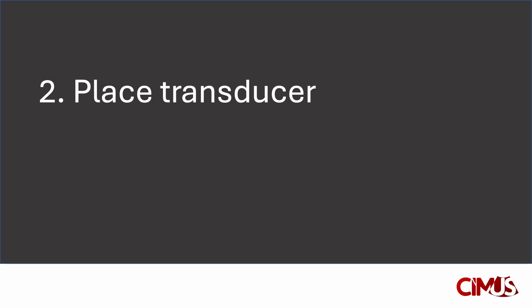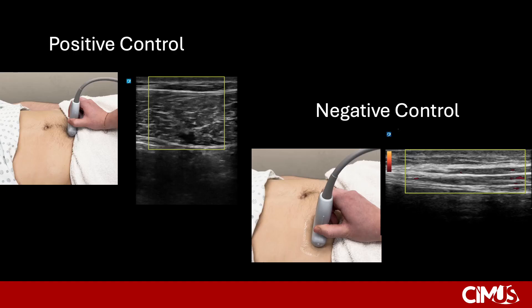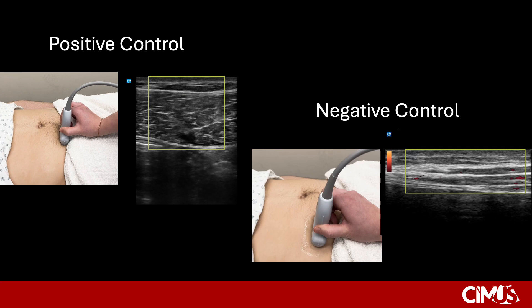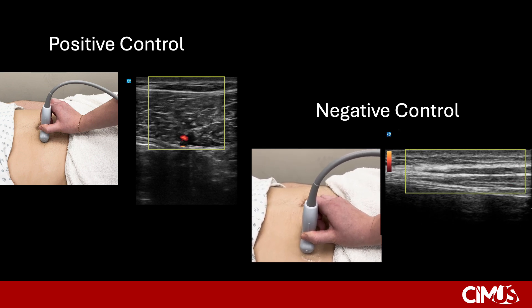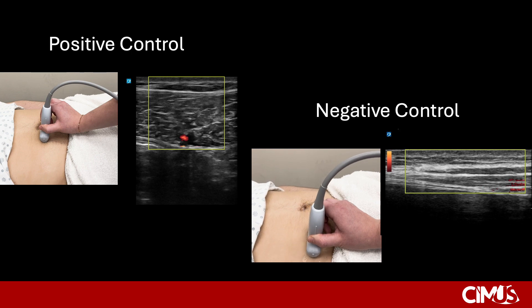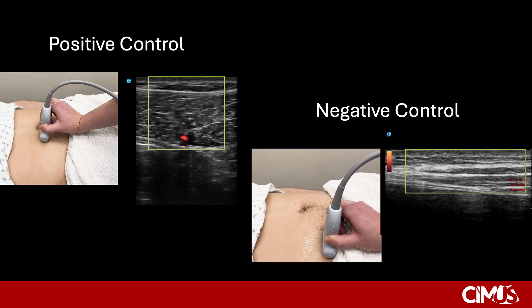Now let's go over transducer placement. To confirm the presence or absence of vessels, you should perform both a positive and a negative control. In a positive control, place the probe over where you expect to see the vessels. Here we have an example of identifying the inferior epigastric vessels. The operator carefully scans the area, and positive identification confirms their presence and lets the operator know which area to avoid. In negative control, the ultrasound probe is positioned where you plan to do the procedure, in this case the right lower quadrant. The operator scans the area to ensure the absence of vessels. It is important to perform both controls, because there are many reasons why a Doppler signal could be negative even when there are vessels in the area scanned.